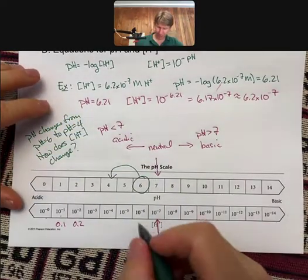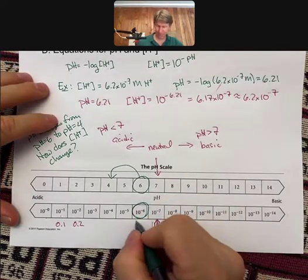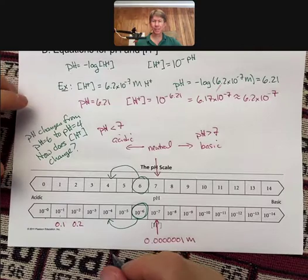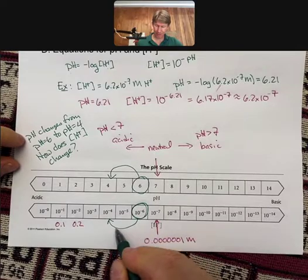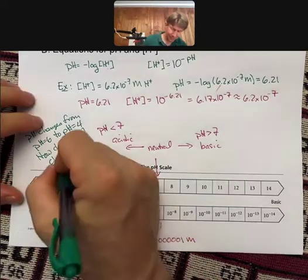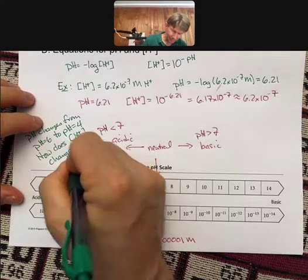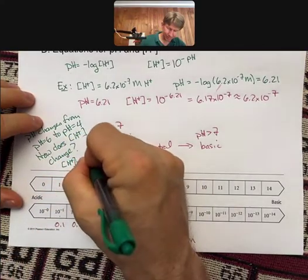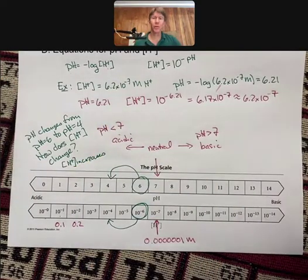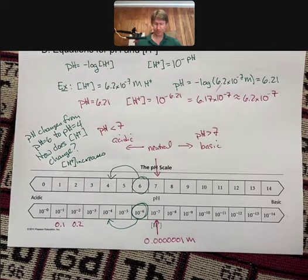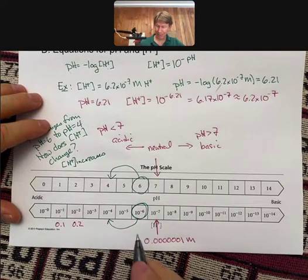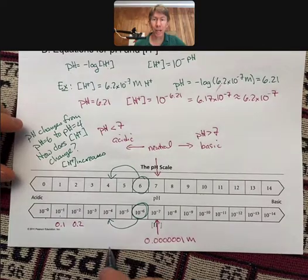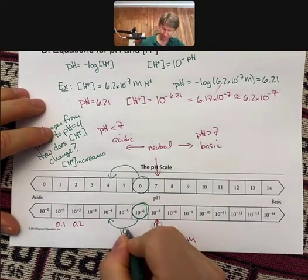Let's start here at 10 to the minus 6. We move over to 10 to the minus 4. As the pH changes from 6 to 4, the concentration of H plus increases. I know the pH is decreasing, but they're really negative exponents. When it goes from 10 to the minus 6 to 10 to the minus 4, that's a change of 100 times, 10 to the 2.